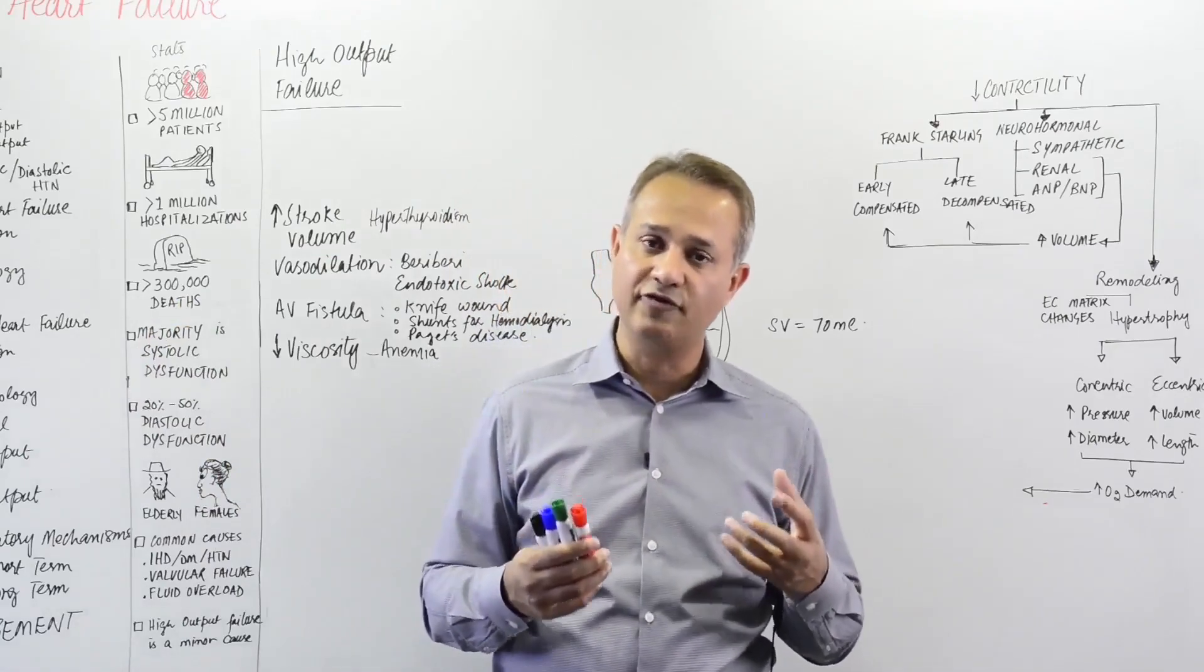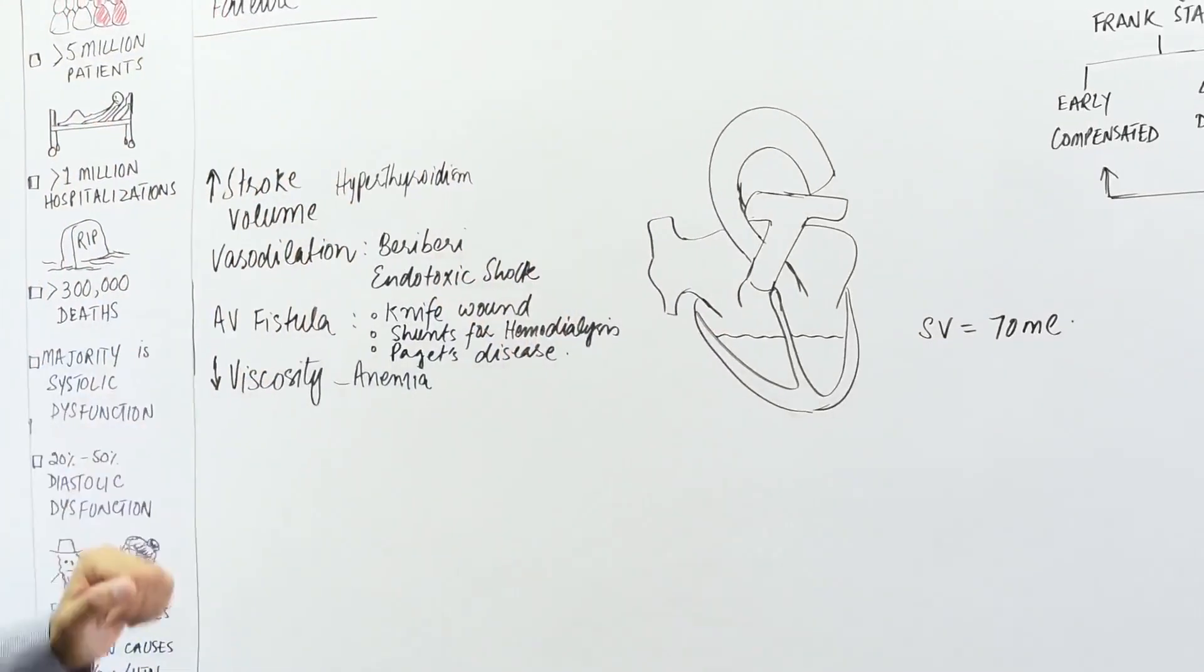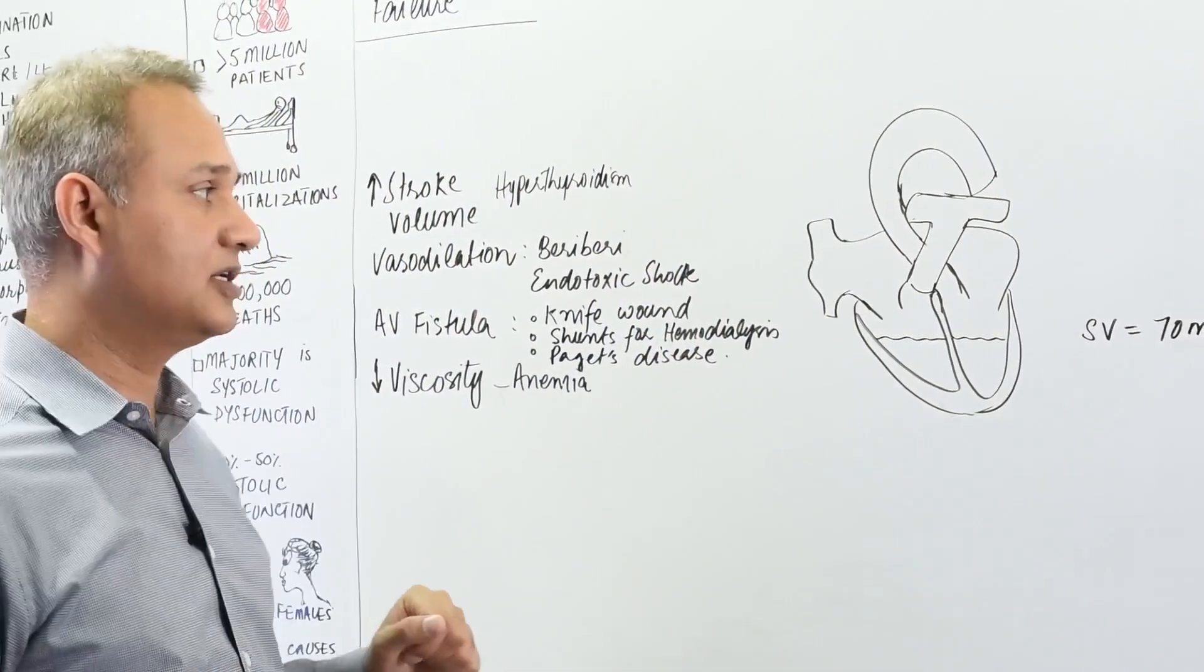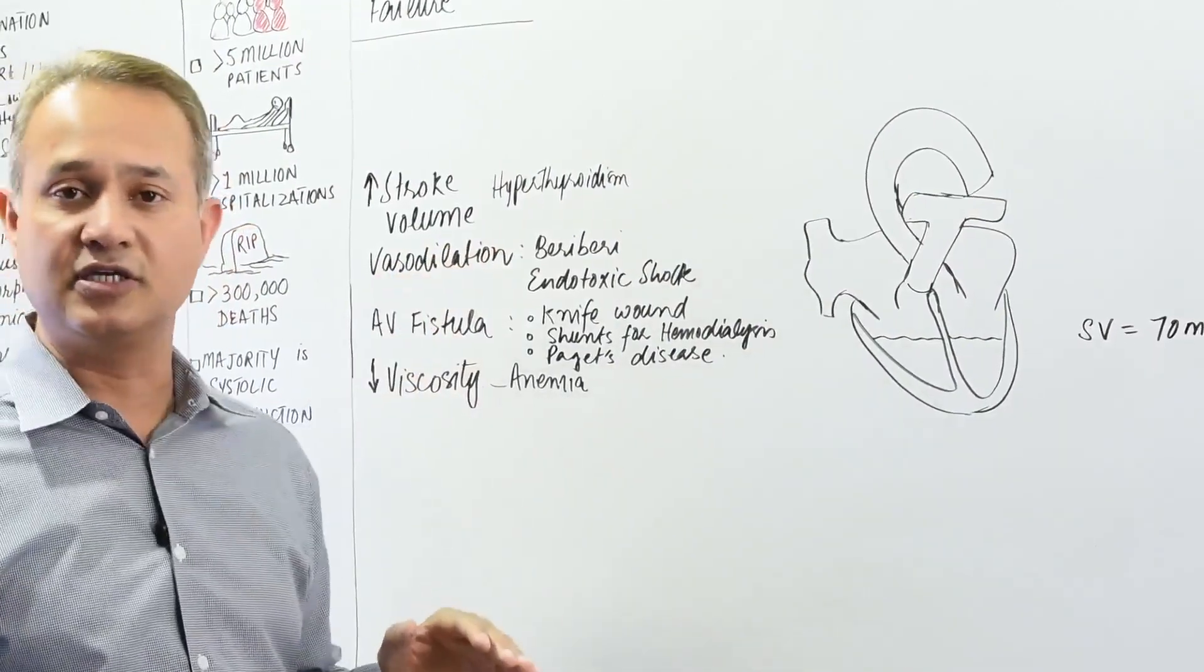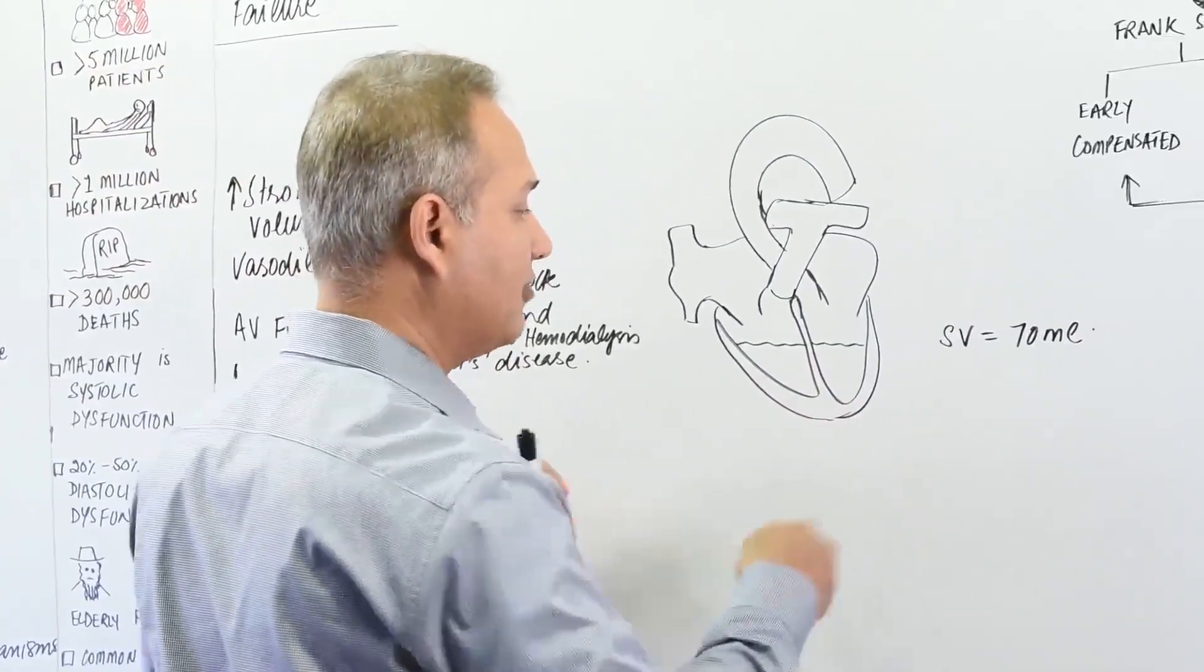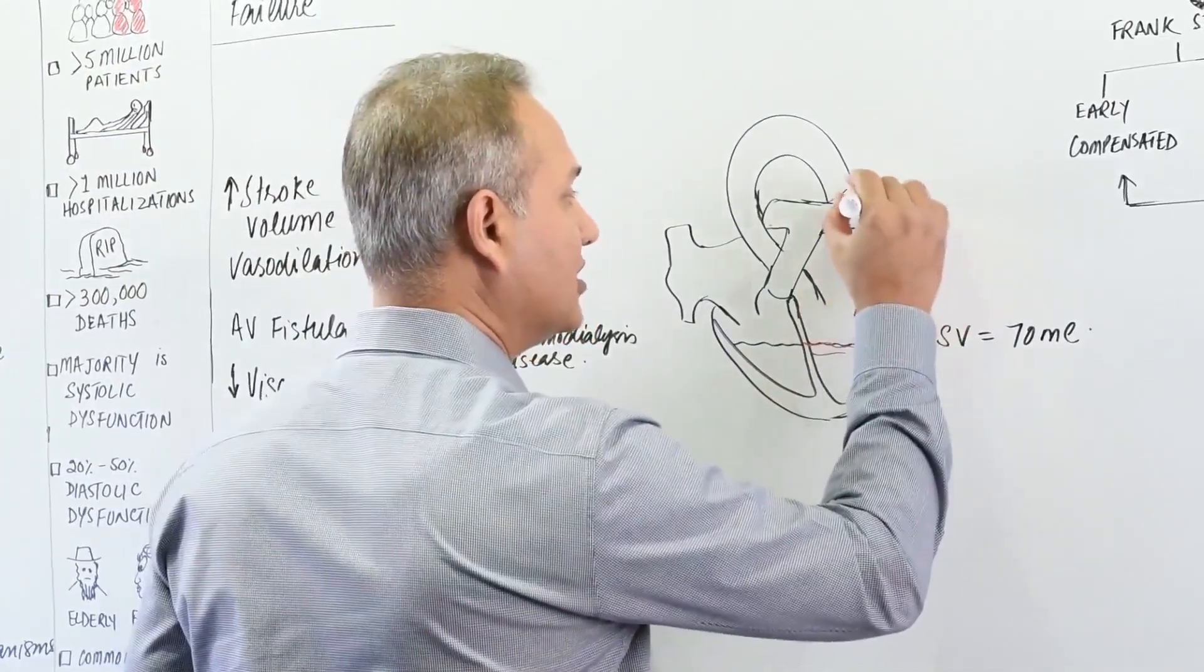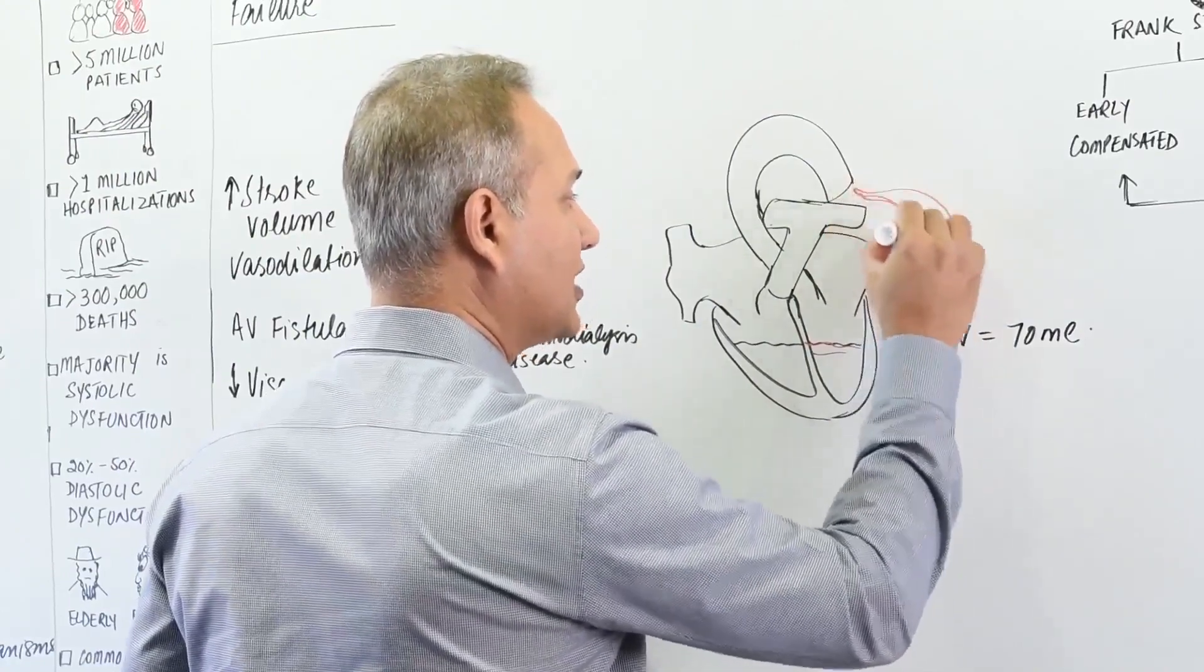Let's see how that happens. Let's start with the condition where stroke volume is increased. Hyperthyroidism does it. Let's say this is the heart, and normally this heart will pump out about 70 milliliters. If this is the stroke volume that came out, let's say 70 milliliters is the normal healthy.